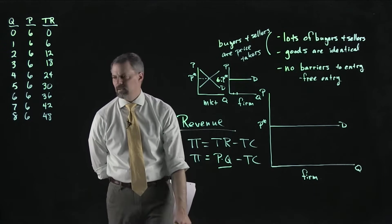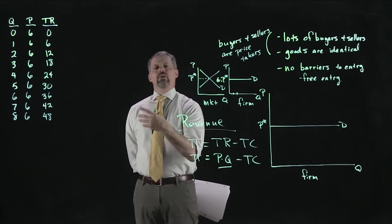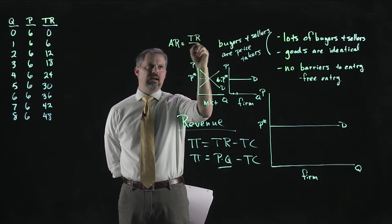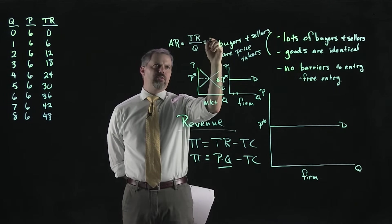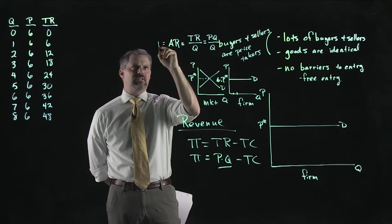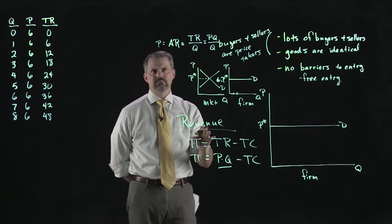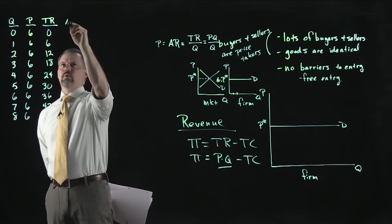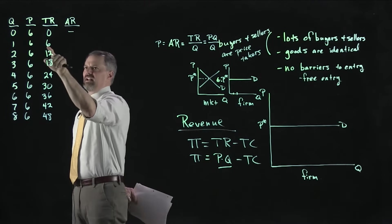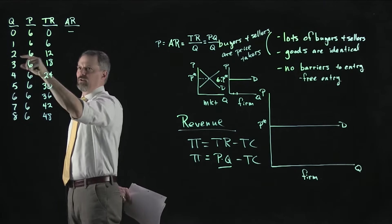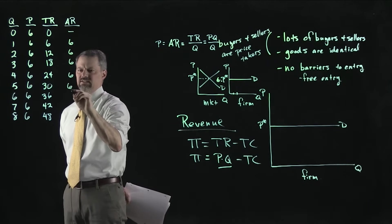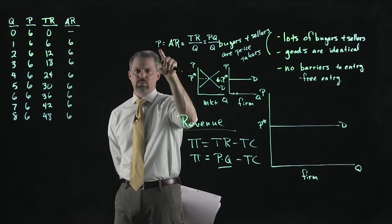Let's think about average revenue, abbreviated AR. Average revenue is total revenue divided by quantity. Since total revenue is price times quantity, the Q's cancel out — average revenue is always equal to price. We can verify: $6 of total revenue divided by one gallon is $6; $12 divided by two is $6; $18 divided by three is $6. This is $6 all the way down, which makes sense because average revenue equals price and price is $6.